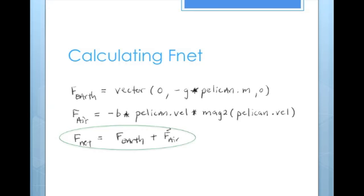The final step in getting F net is just to add those forces together. We need to create a line of code that combines the force of air and the force of the earth that we just calculated previously. This is shown circled at the bottom.